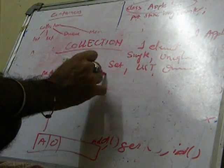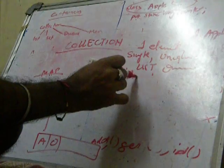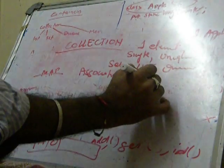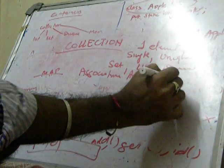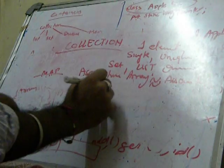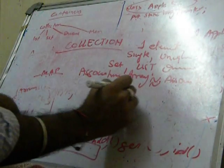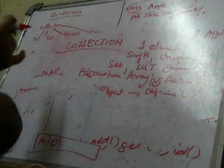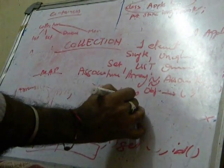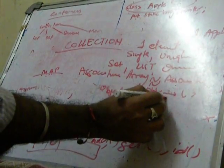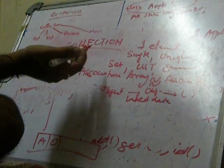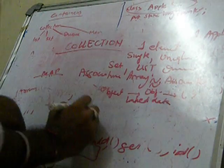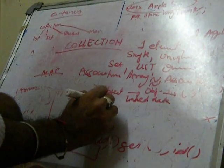Second is map. Map is something which stores in a form of associative array. Associative array means some kind of association, means I have an object which is related to some other object or some other array or some kind of relation. So some kind of linked data then we use map. So map is a group of key value pairs.